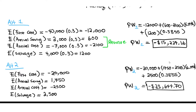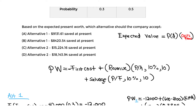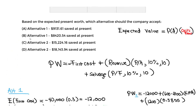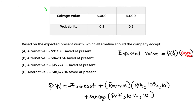Now we answer the question: which alternative do we choose? We pick the one requiring less money put down — that's alternative one at -$15,224.16 versus -$23,644.70. Taking the difference: 23,644.70 - 15,224.16 ≈ $8,420. So we choose alternative one and save about $8,420 at present compared to alternative two.